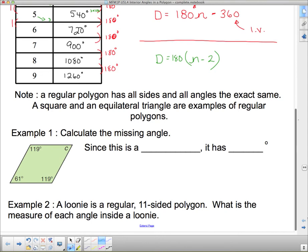So we've only got three examples to go through here. And the first thing I want you to notice is what a regular polygon is. A regular polygon has all sides and all angles exactly the same. And so we're going to be looking at regular polygons in some cases.